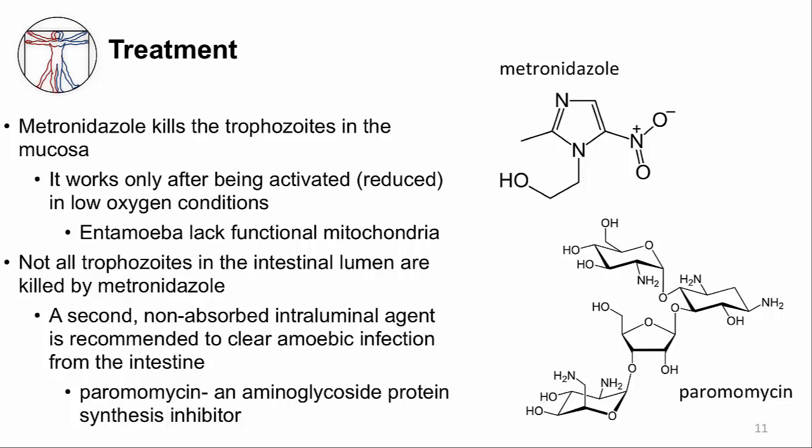The second drug is paromomycin. It's an aminoglycoside like gentamicin. It's not absorbed across cell membranes, so when you give it orally, it achieves high concentrations in the lumen of the gut but doesn't get absorbed.